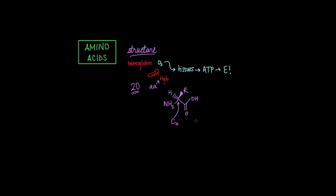What makes each of the 20 amino acids different from each other is this R group or the side chain. So each of the side chains for the amino acids is going to look different.